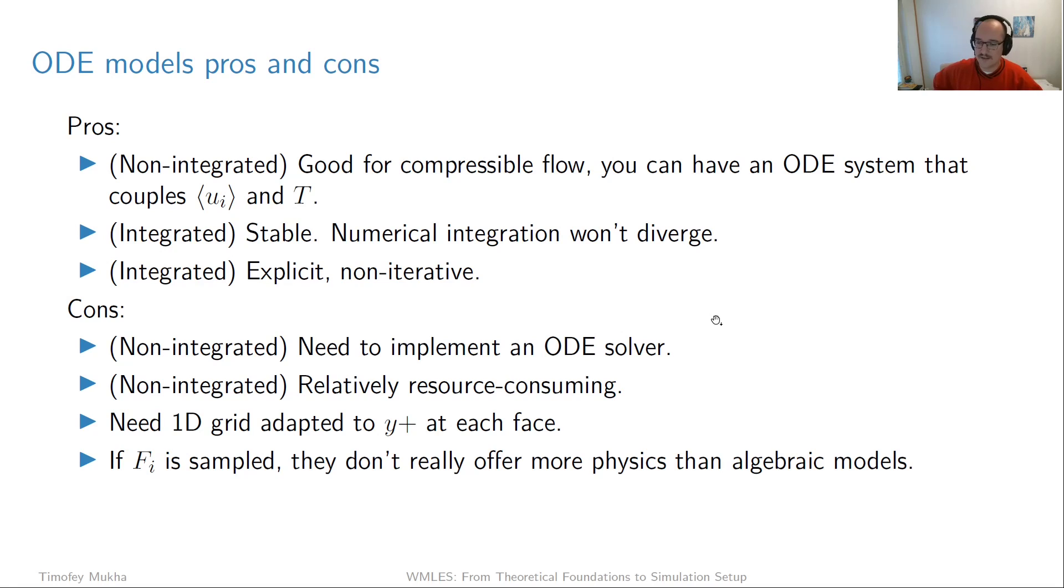The last con is the treatment of Fi, this right-hand side of the ODE. The problem is, are we winning anything if we're not really treating it well? Do we get any more physics compared to simpler algebraic models? The answer really is no, you don't really get much extra. It's unclear in what situation you would want to use it compared to a more widespread and simpler algebraic model. One of the strongest cases for ODE models is compressible flow where you need a tightly coupled system for momentum and temperature wall models. Otherwise, most of the time you're equally good with an algebraic model. But that's just my opinion.